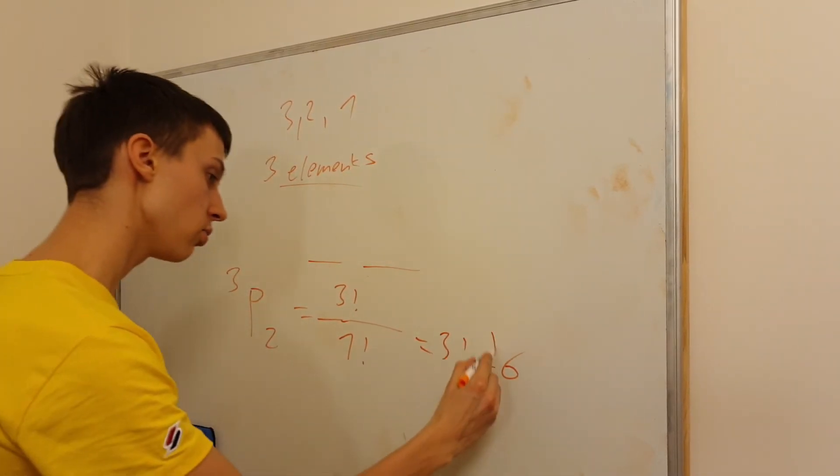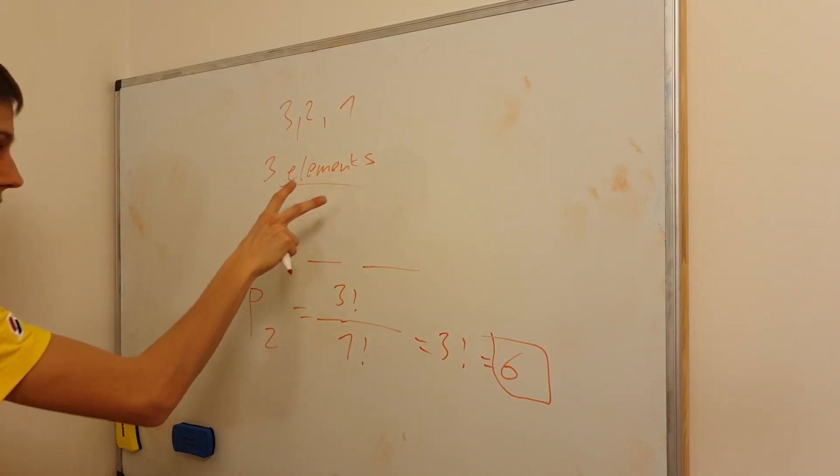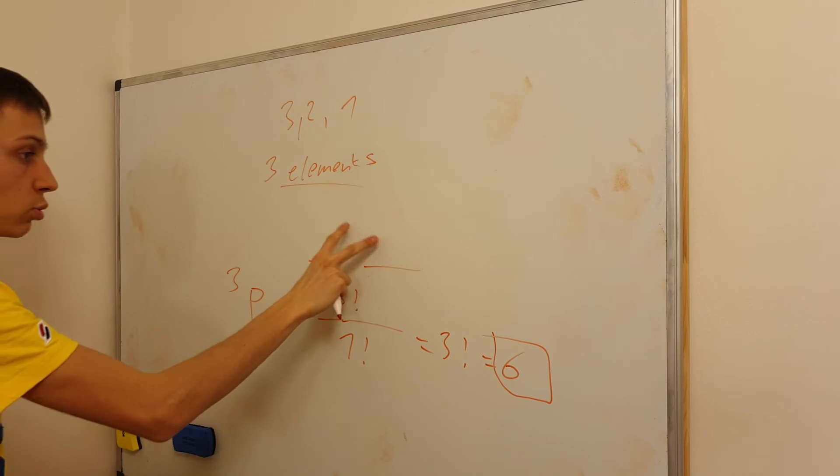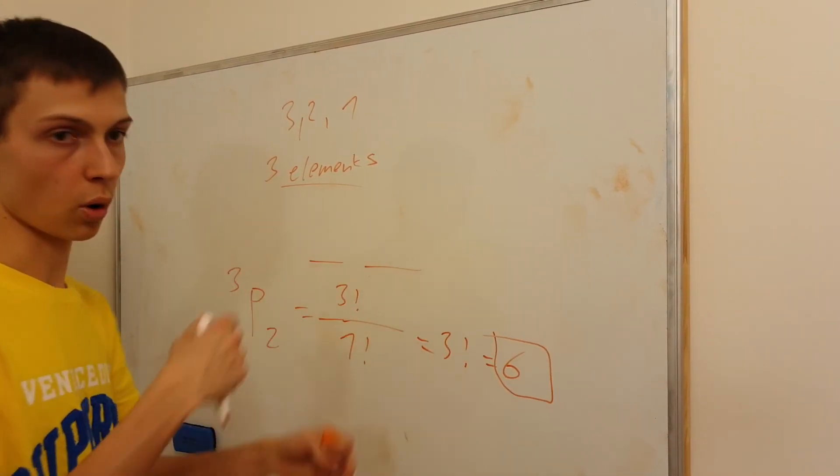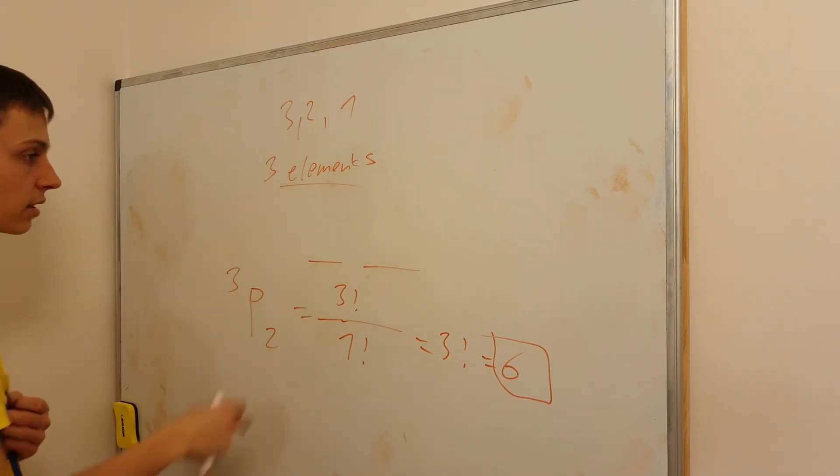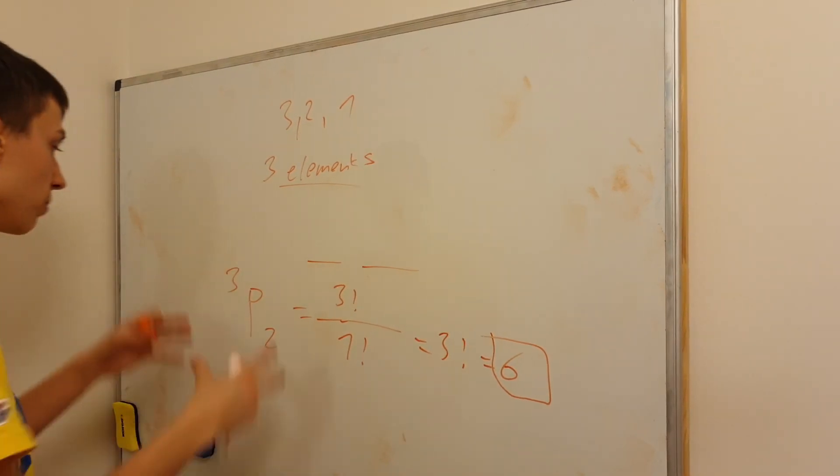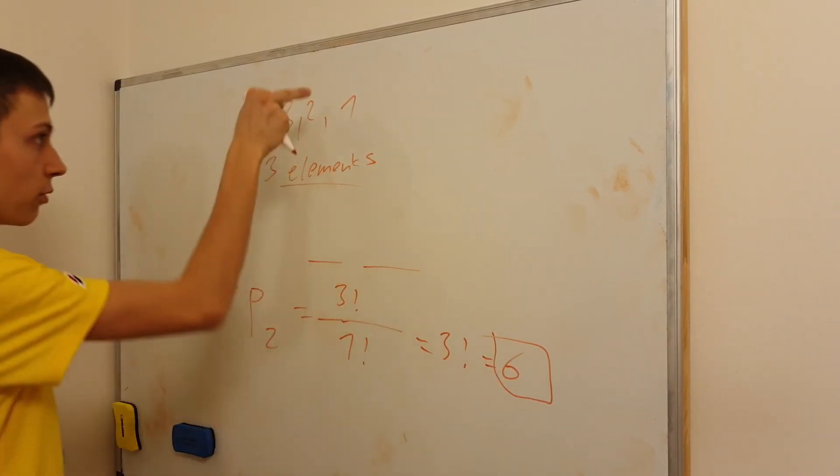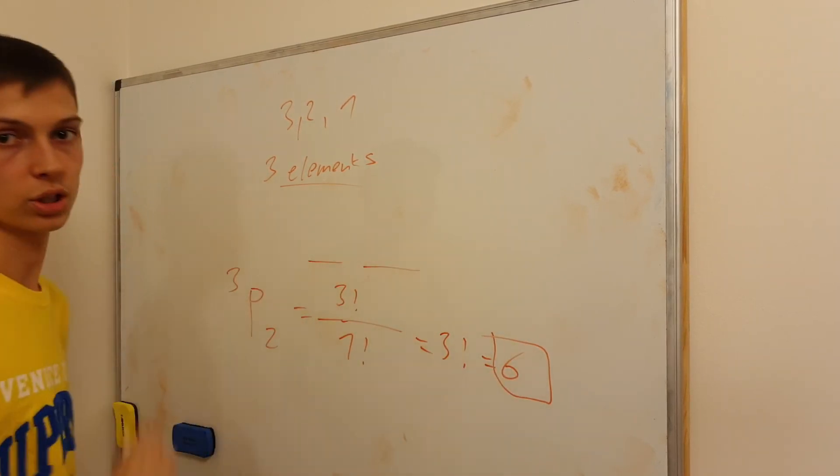So the answer is, if we have three elements and we're going to organize them into two positions, and we also care about their mutual order, the order at which two of these three elements are put onto these two positions, then we do the permutation, and it tells us that from three digits we can create six two-digit numbers.